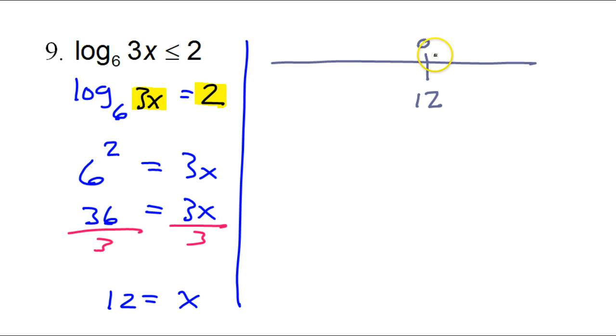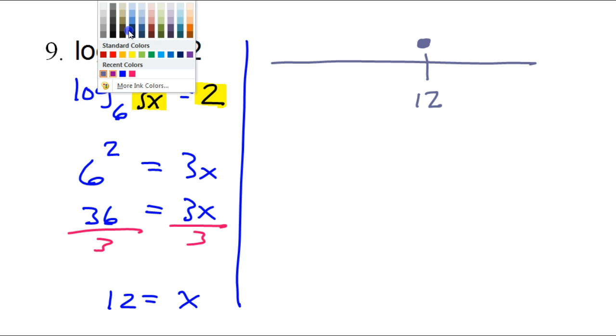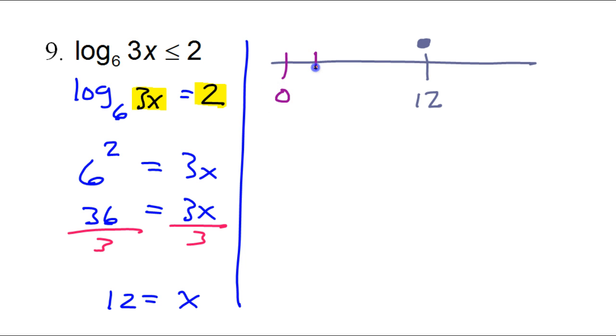We always start off with a circle. Now, will it be open or closed? Well, it's less than or equal to 2. 12 is where it's equal to 2. We're including that by making it a closed circle. So now it's just a matter of will our solutions go to the right or will they go to the left, being careful to stop at 0 because it's a log function. Test values. We can pick a value either to the left or to the right of 12. I'm going to pick an x value of 1. So let's say here's 0 and here is 1. So I'm going to do a test value of 1. So let's test x equals 1.